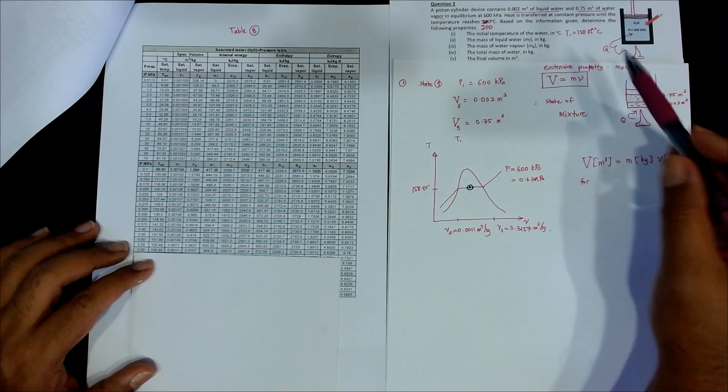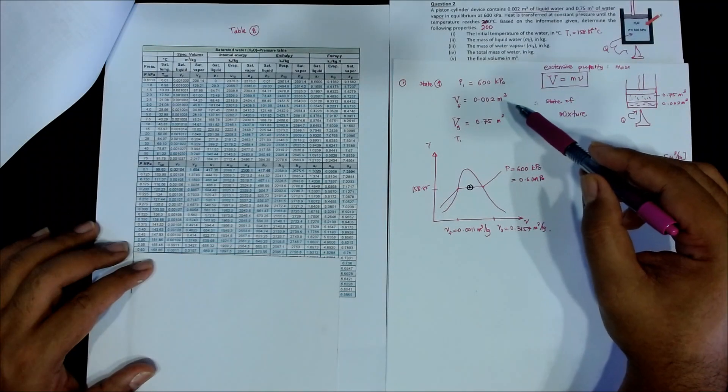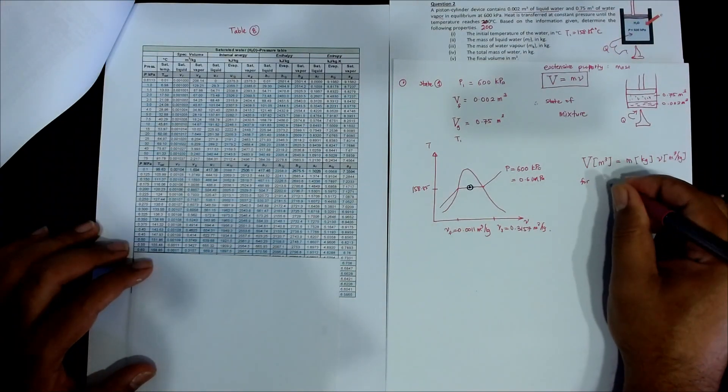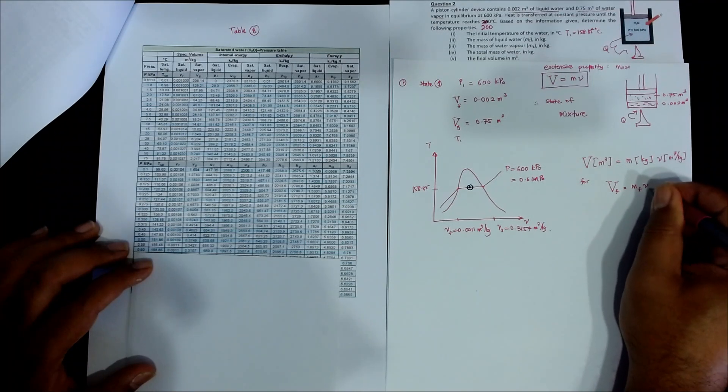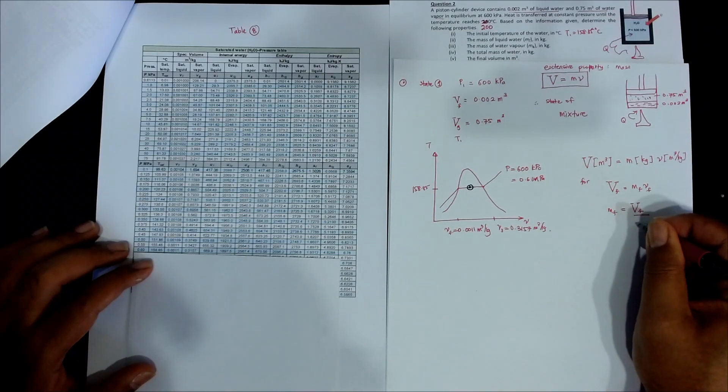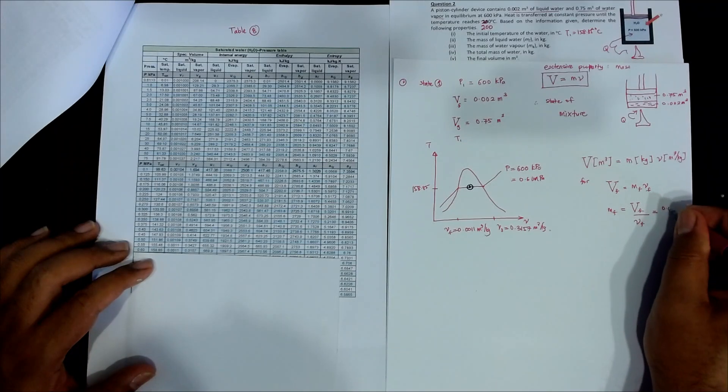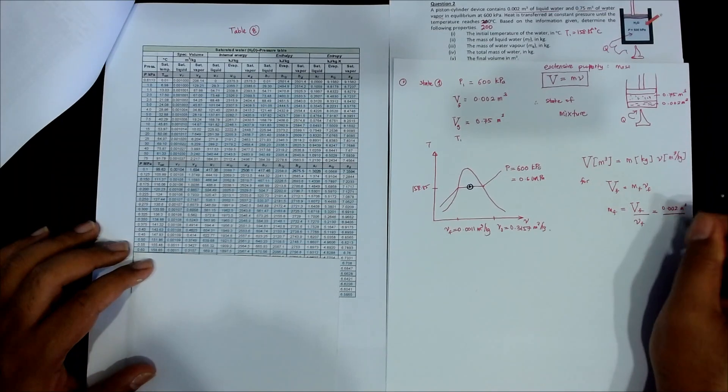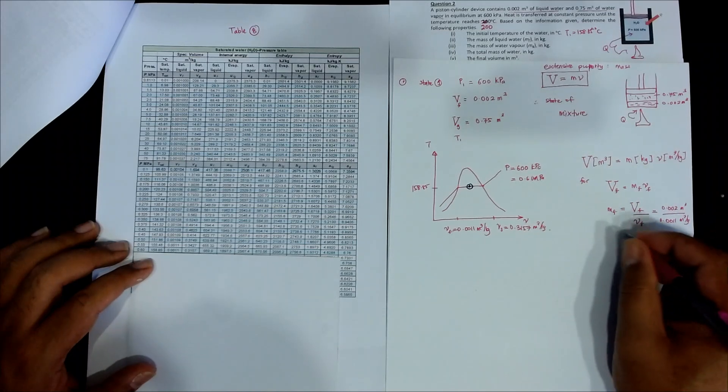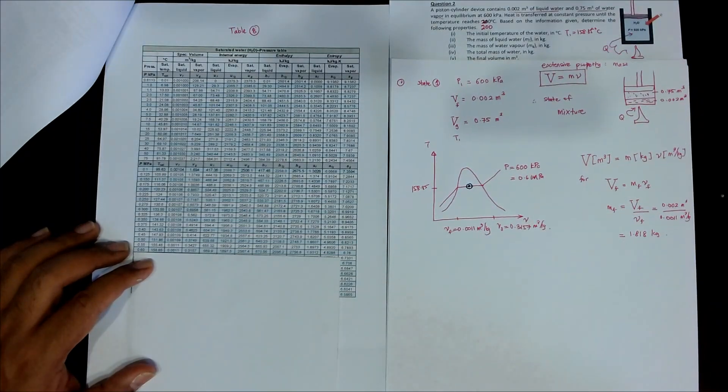And then what are the liquid mass? So the volume is 0.002 meter cube in a saturated liquid. So what is the mass of the liquid? So use this formula. Again, VF equals to MF small VF. So MF equal to large VF over V small F. So equivalence to 0.002 meter cube over this one, 0.0011 meter cube per kilogram. So when we go up, we got the value of 1.818 kilogram.